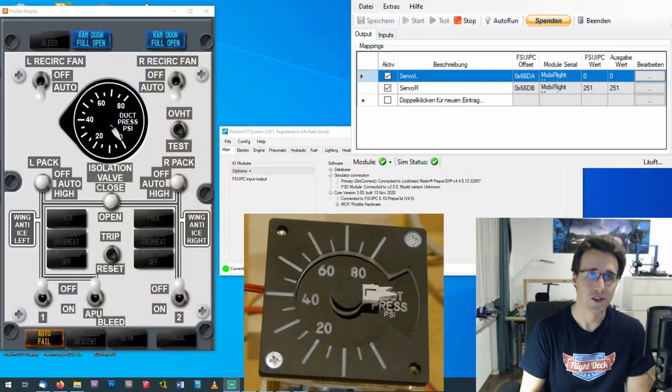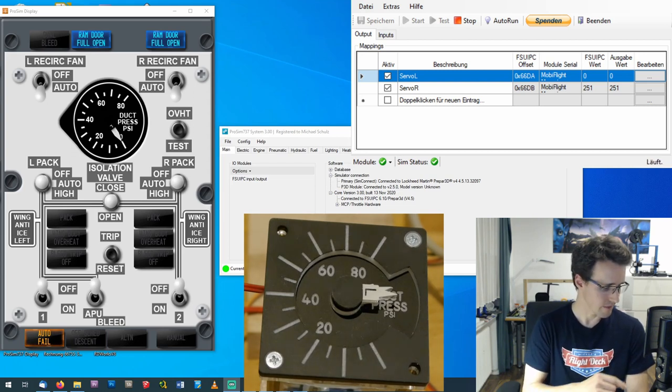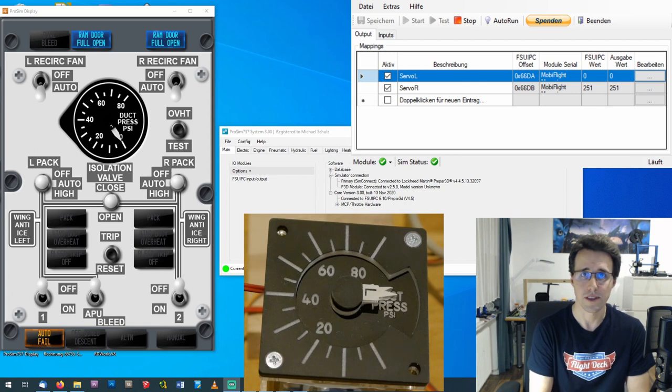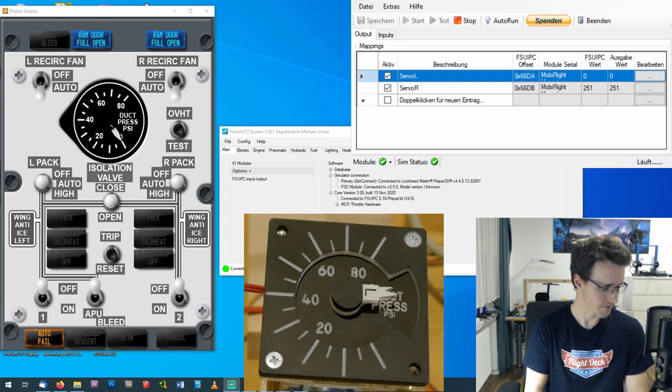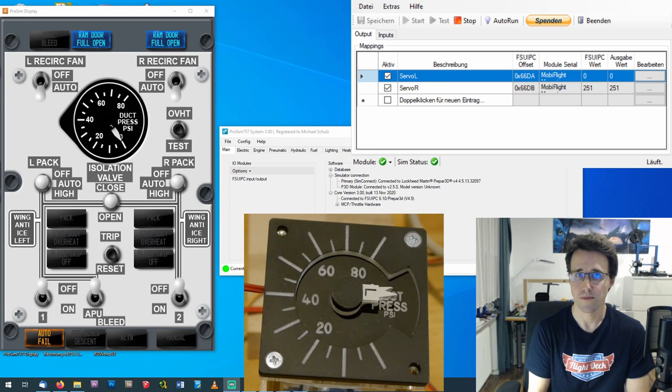To test my gauge communicating with ProSim I have connected it to a temporary MobiFlight module which is just an Arduino which I use for those purposes. You can see I have declared two outputs in MobiFlight servo motor left and right and assigned an offset. On the right side you can see 66DA and 66DB.